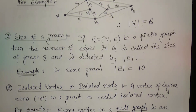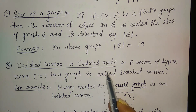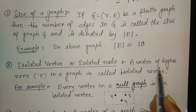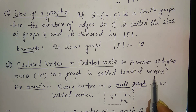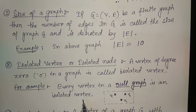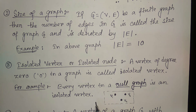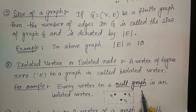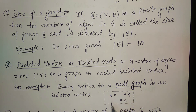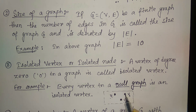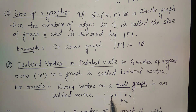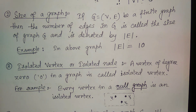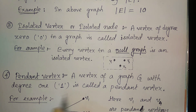Next is the isolated vertex, or isolated node. A vertex of degree zero in a graph is called an isolated vertex. This is possible for the null graph. Suppose this is a null graph — here three vertices v1, v2, v3 are there with no edges, so each vertex has degree zero. These are called isolated vertices.